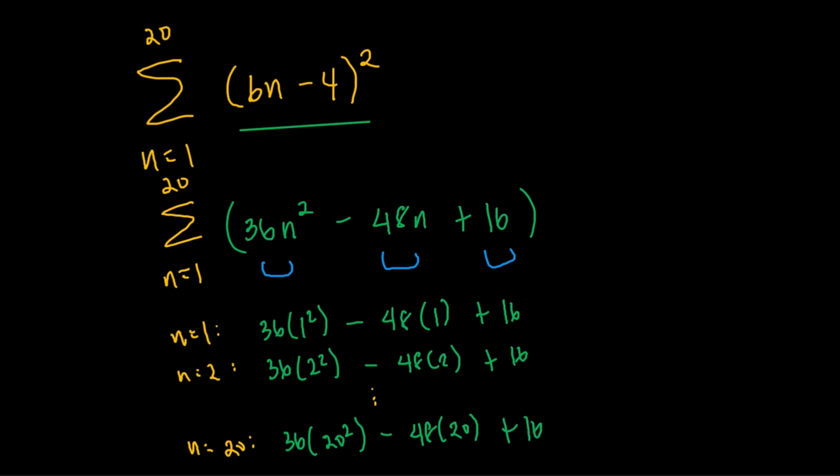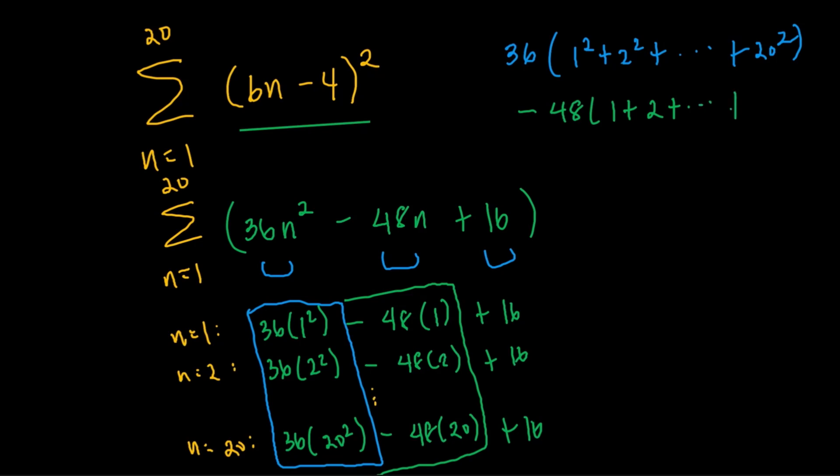And we could just add the terms that are pretty similar. Take a look. In the 36 times something squared, we're essentially doing 36 times the sum of the squares from 1 to 20. And then for the next column, essentially I'm doing minus 48 times the sum of the positive integers from 1 to 20. And then for the last column here, a bunch of 16s. Well, since I'm adding from n equals 1 to n equals 20, that's going to just be 20 16s, right? So 16 times 20.